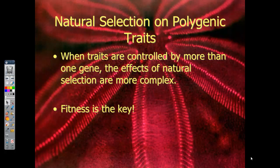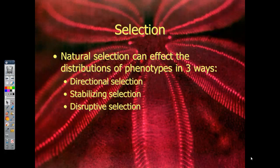When talking about polygenic traits, natural selection is going to be a little more complex. Fitness is most important, so it needs to be more specific to that particular environment, not just one over the other. The types of selection you need to know are directional, stabilizing, and disruptive.